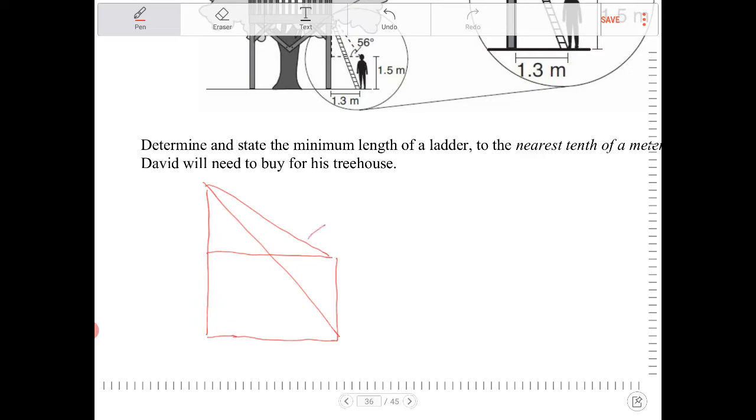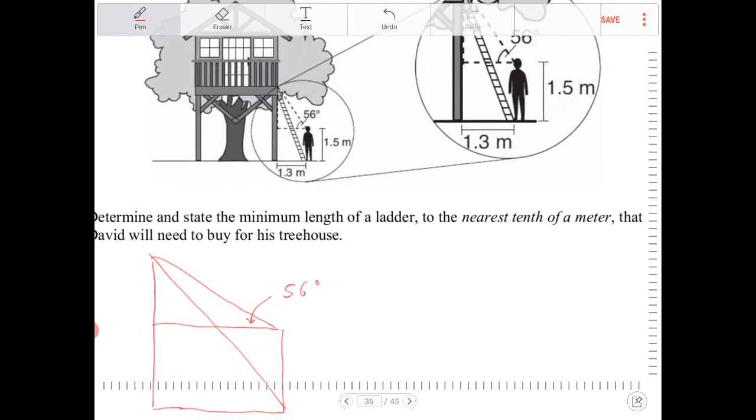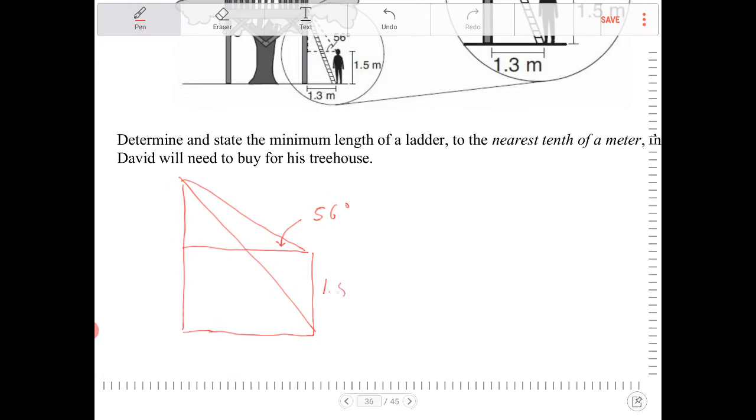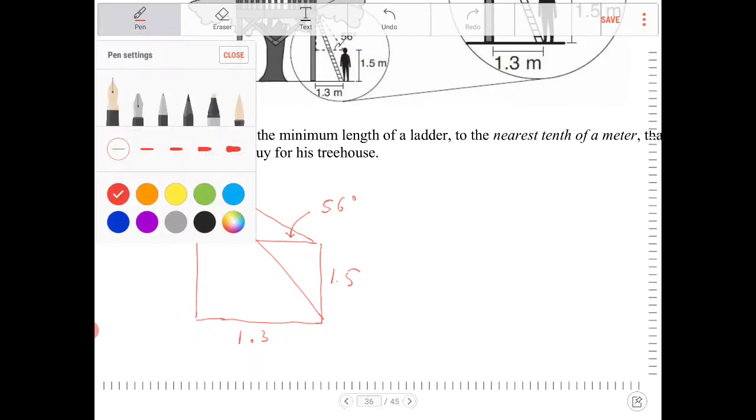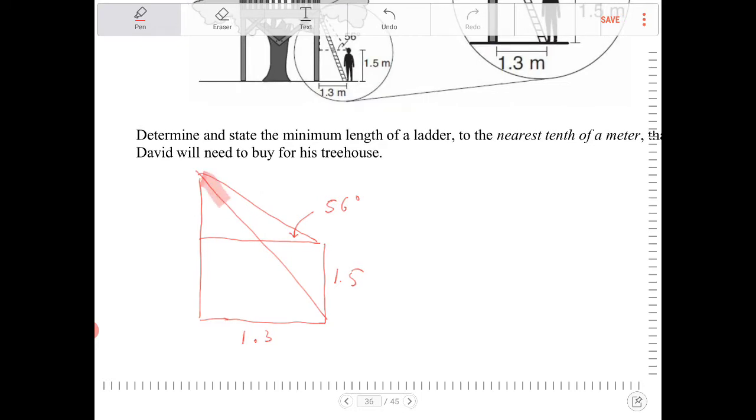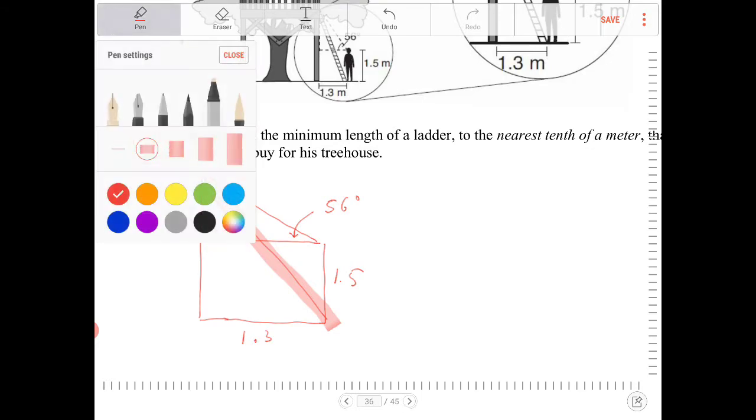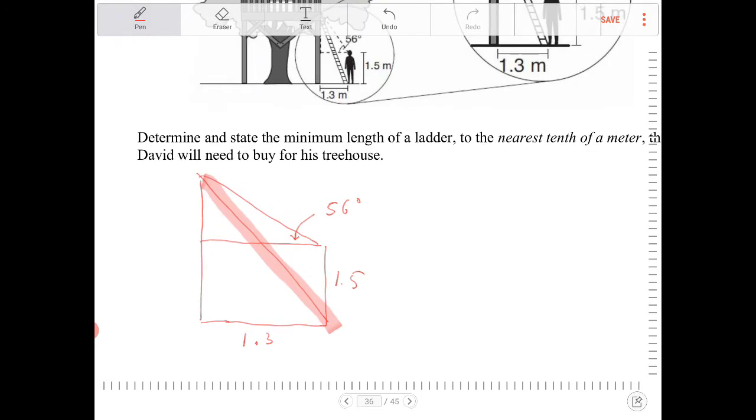And this is 56 degrees. This is 1.5. This is 1.3. And I need to figure out the length of the ladder, which I'm going to highlight here with my highlighter. I need that, which looks challenging at first, doesn't it?